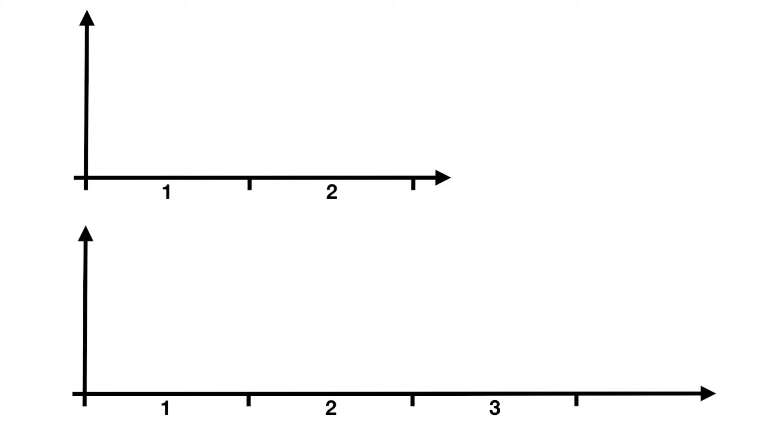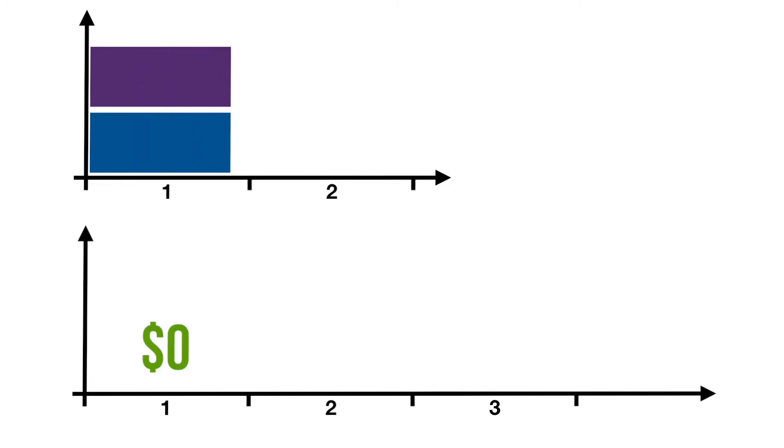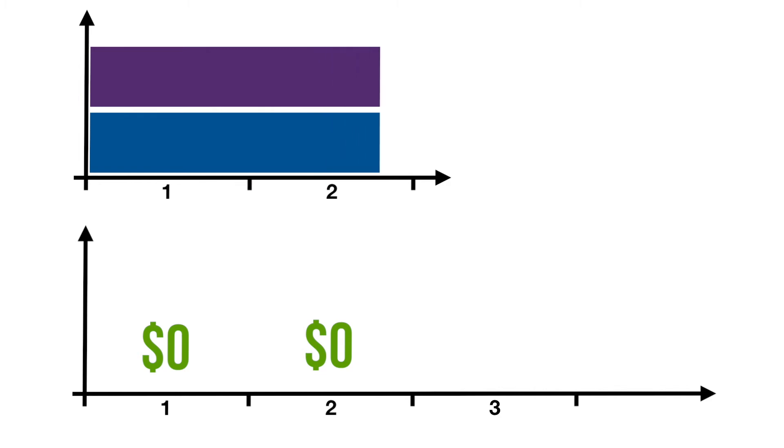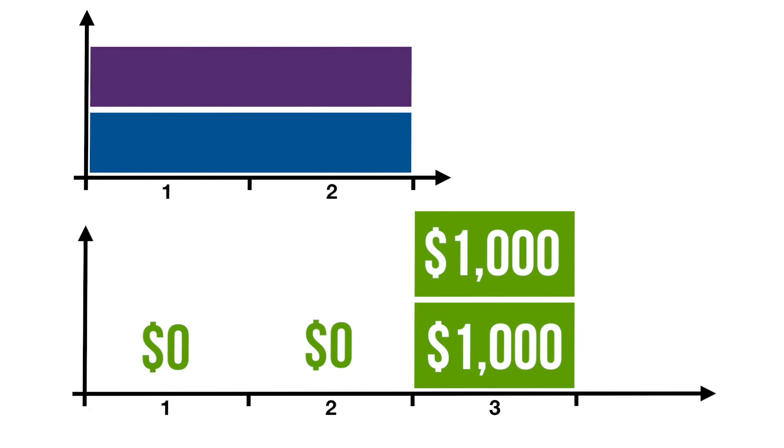What if you'd done things differently? What if you'd launched both products at the same time? Week 1, zero income. Week 2, zero income again. Week 3, $1,000 plus $1,000, $2,000 income.